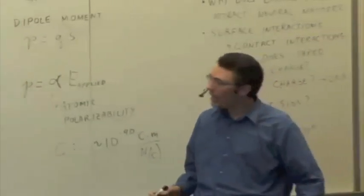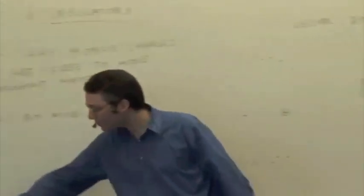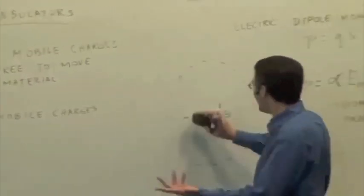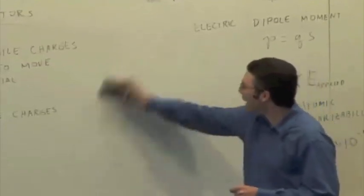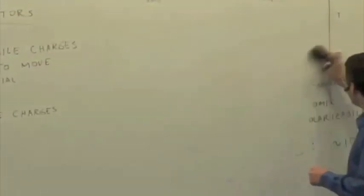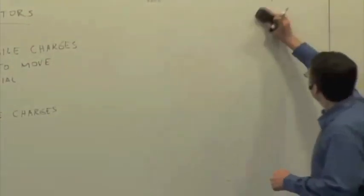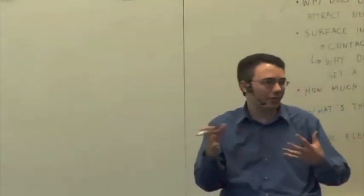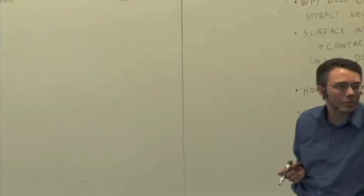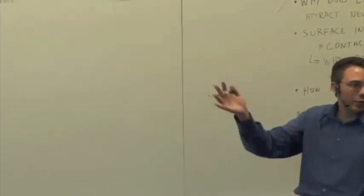What we've been dealing with so far — the case of the tape, for example — was an insulator. In insulators, we have positively charged nuclei and electrons bound to those nuclei. The key idea is that those electrons are bound to the individual nuclei and can't move, at least not very much. They can shift a little bit — the electron clouds in the atoms or molecules can shift — but they're not free to move throughout the material.